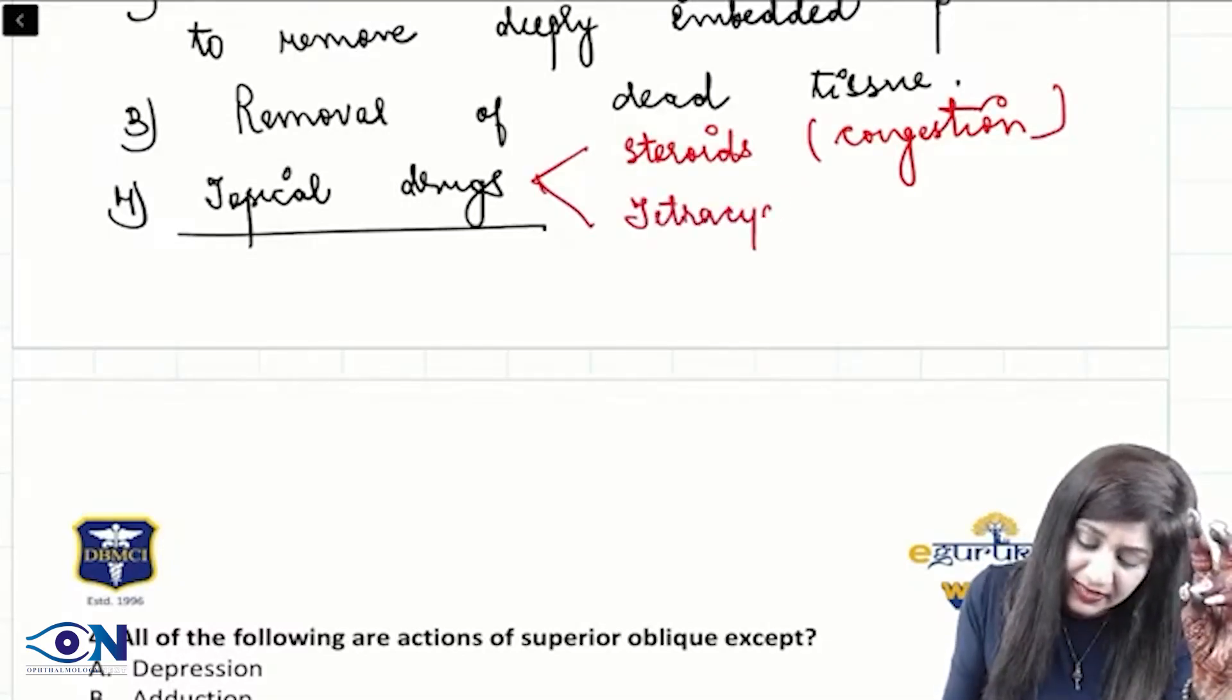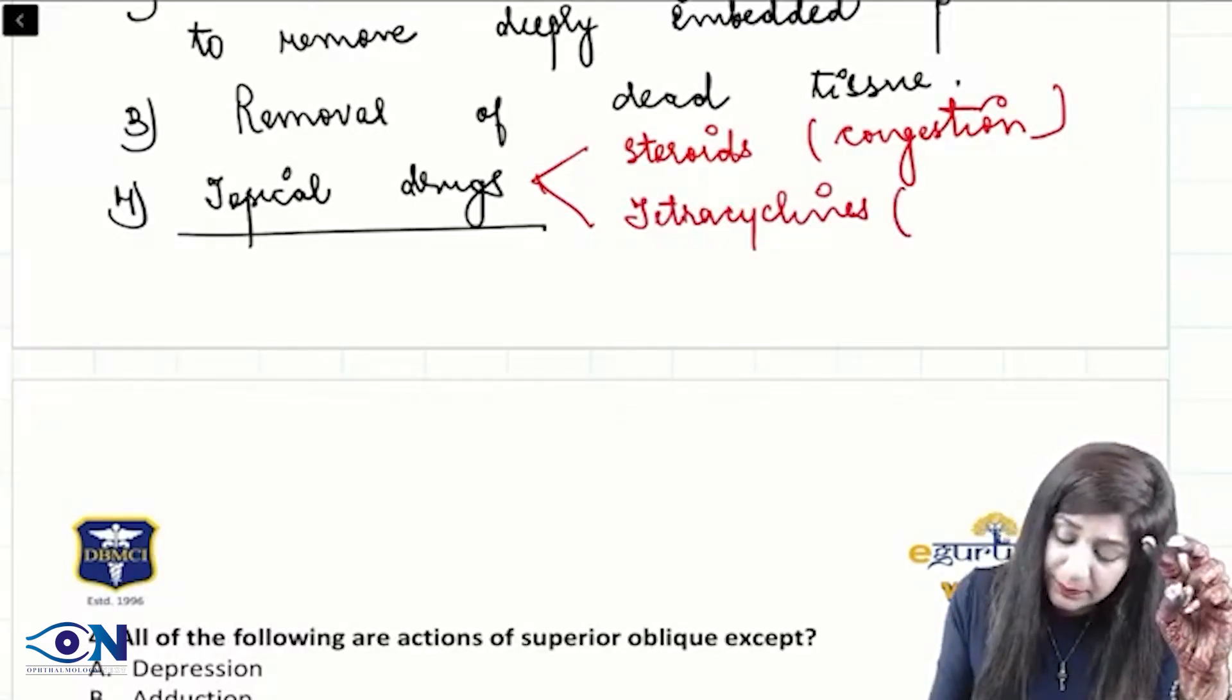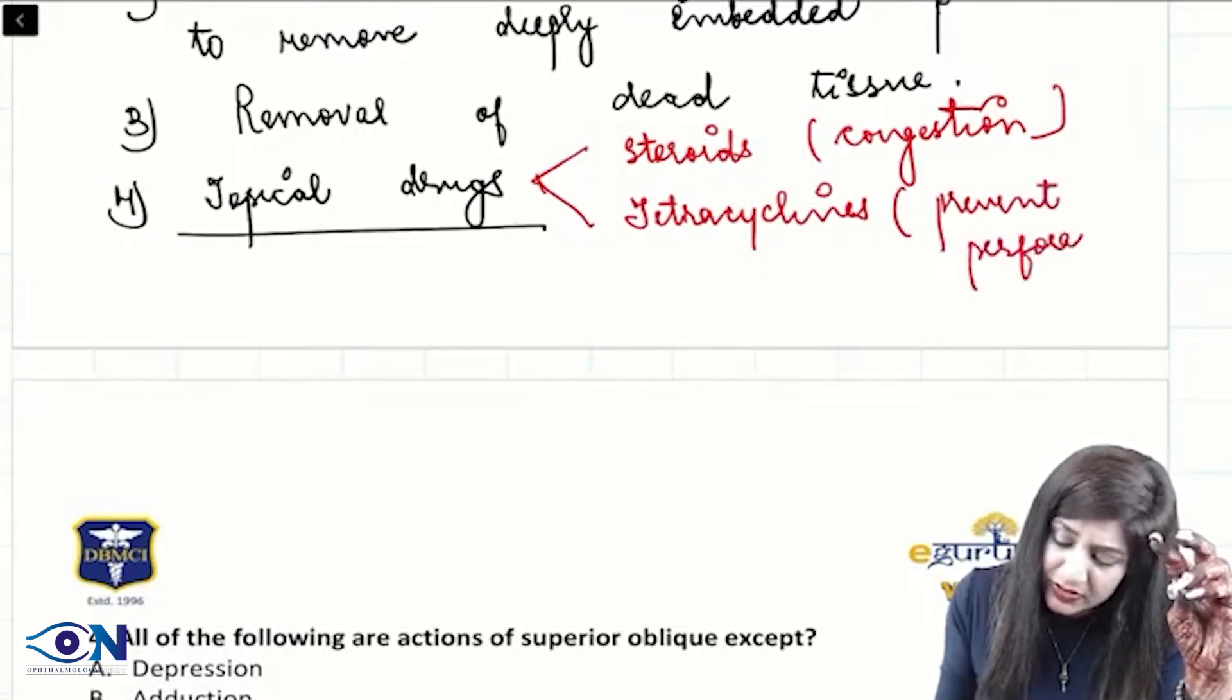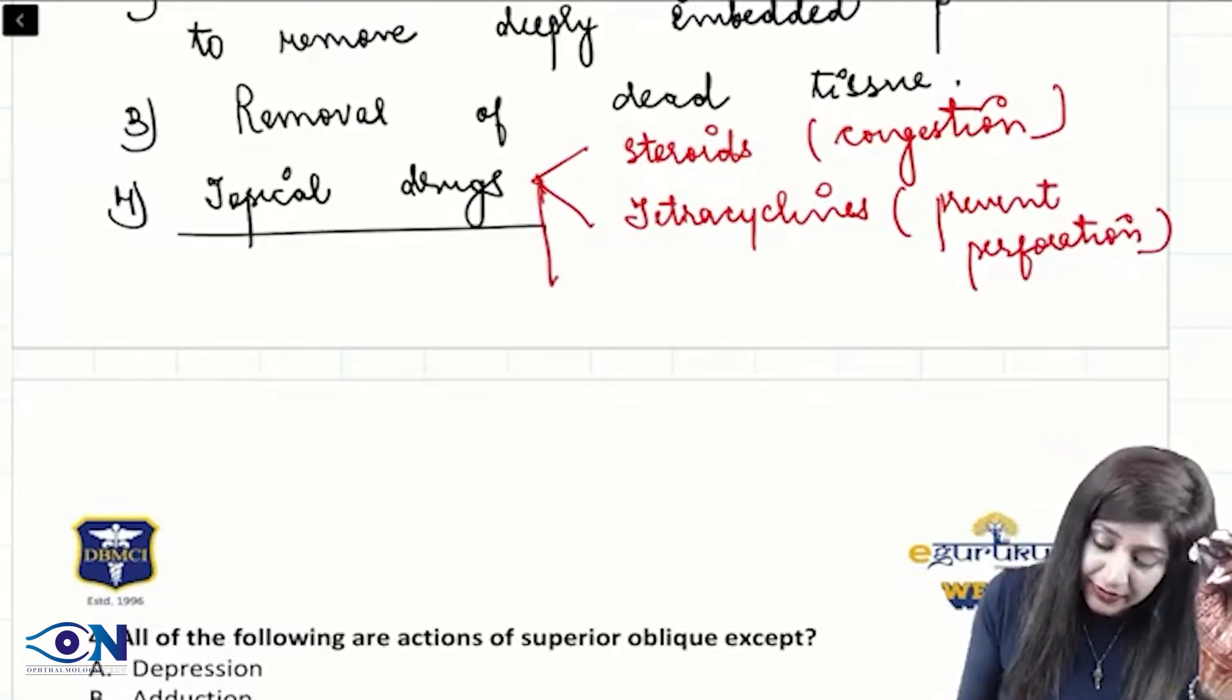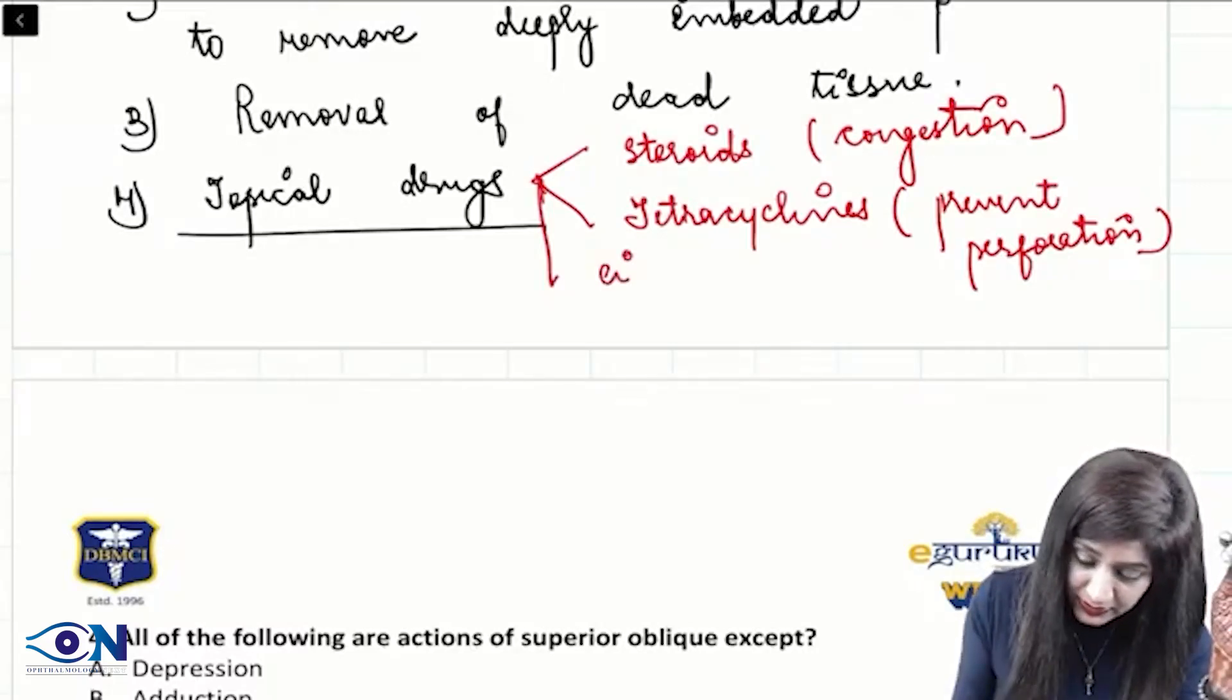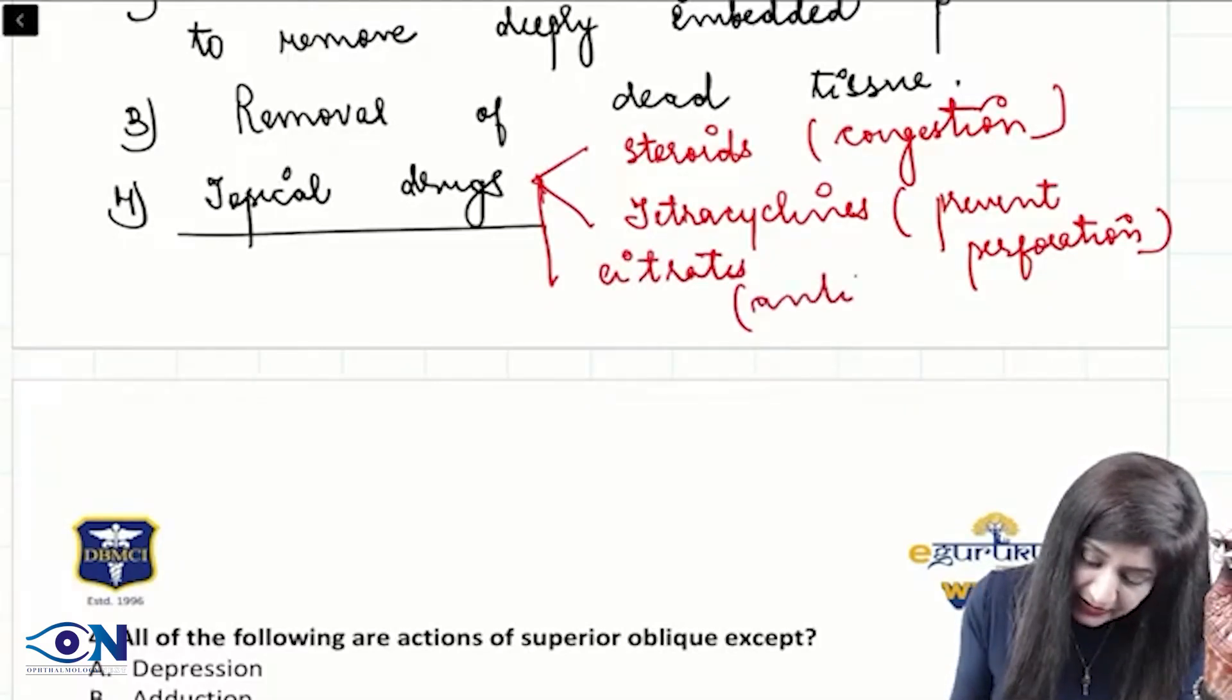We can give tetracycline or the tetracycline group of drugs which is preventing perforation. To prevent perforation, we have to give this drug. You can give doxycycline, you can give tetracycline, and then we also give the citrate. Citrates will be acting as the antidotes.